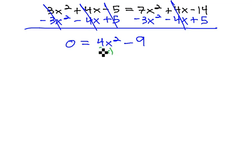Square root of 4x squared is 2x, and the square root of 9 is 3. It does work.